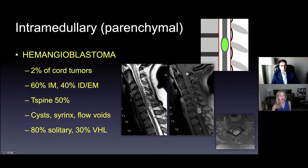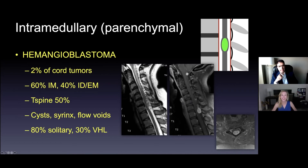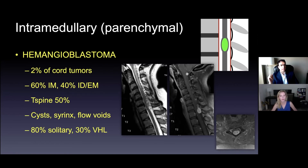Hemangioblastomas are rare. About 60% are entirely intramedullary; 40% are intradural extramedullary. About half are in the thoracic spine. They often have cysts and a syrinx. They're very vascular, and 80% are solitary tumors. However, people with von Hippel-Lindau disease frequently develop these, so we do surveillance — imaging every six months to a year — to watch for growth of these spinal hemangioblastomas. A useful rule: a tiny lesion with a huge cyst or tons of edema out of proportion to the lesion size usually means hemangioblastoma.